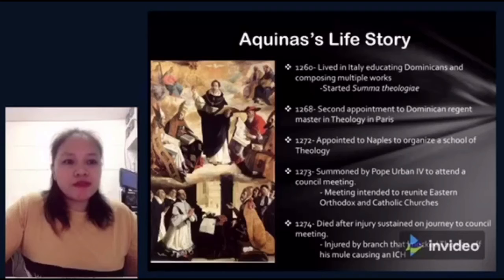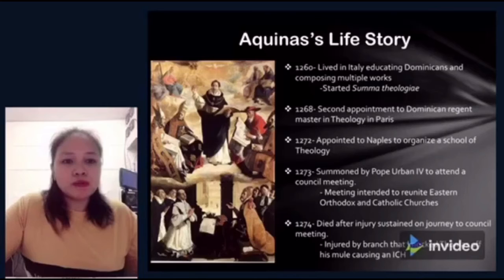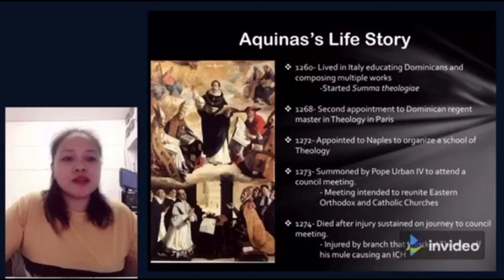In 1243, he secretly joined an order of Dominican monks, receiving the habit in 1244. When his family found out, they felt so betrayed that he had turned his back on the principles to which they subscribed that they decided to kidnap him. Thomas' family held him captive for an entire year, imprisoned in the fortress of St. Giovanni at Rocasica. During this time, they attempted to deprogram Thomas of his beliefs. But Thomas held fast to the ideas he had learned at university, and went back to the Dominican order following his release in 1244.